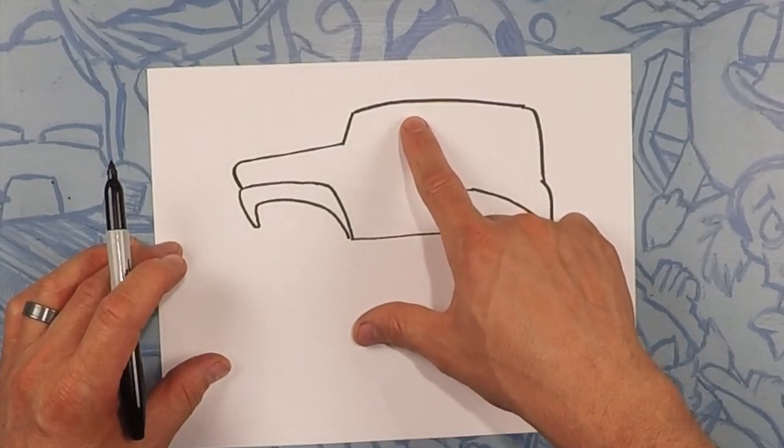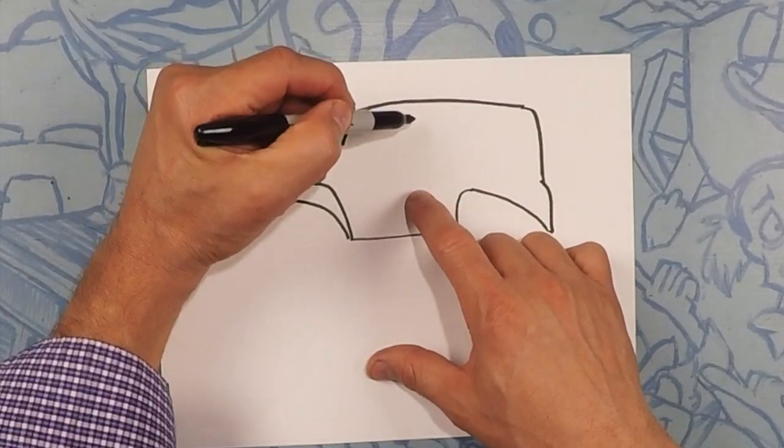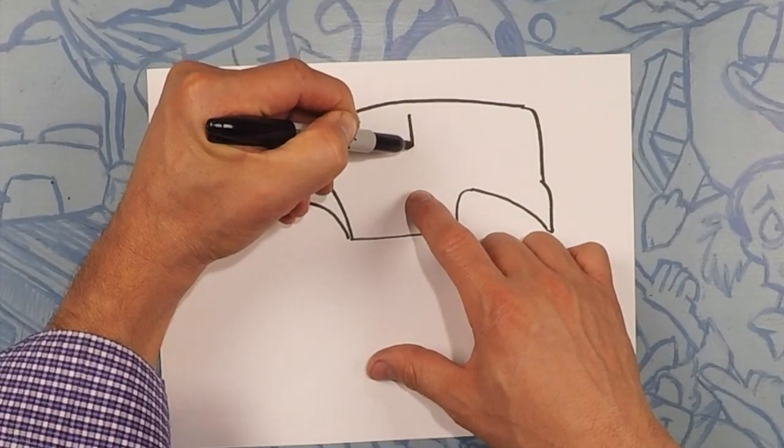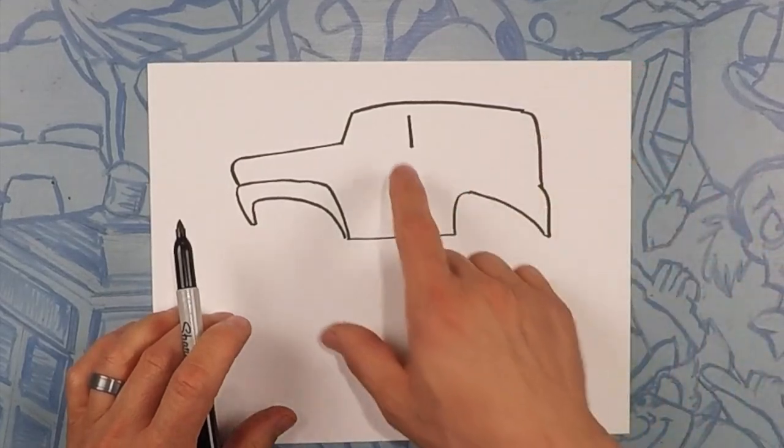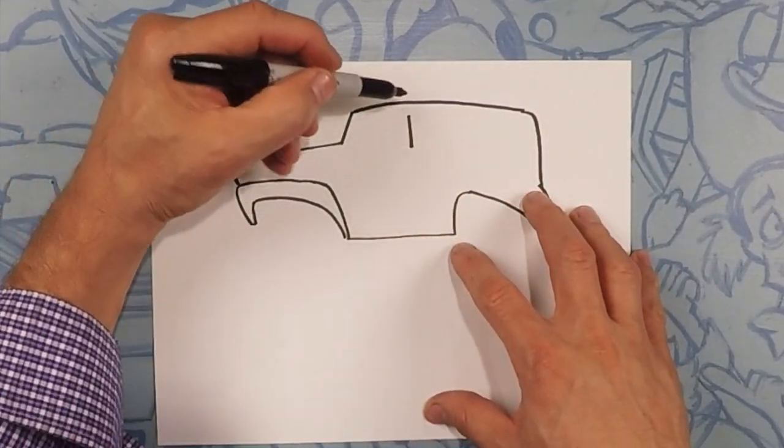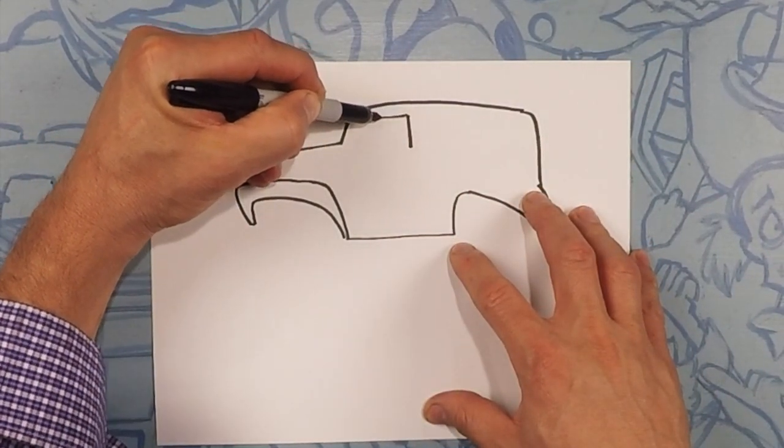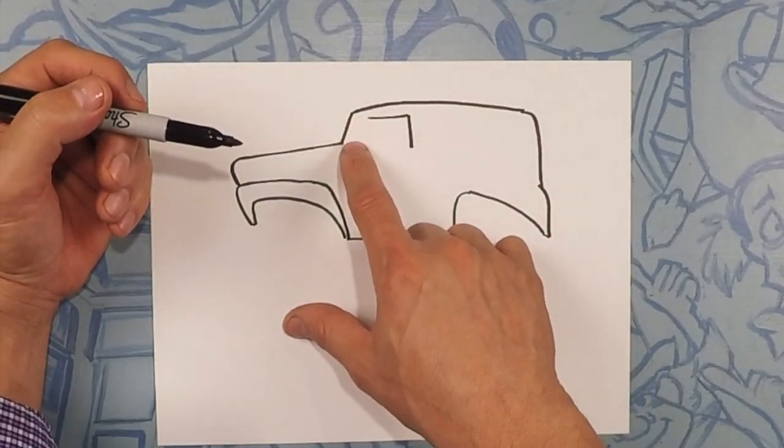So now this window about maybe a little bit back we're going to do a line straight down. This is the driver's side window. We're going to make a line straight across the top and follow this line down at an angle.